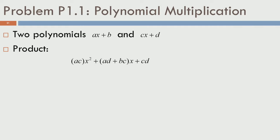Let us take a small problem again. This is a problem on polynomial multiplication. We are given two polynomials ax plus b and cx plus d — that is, you are given the coefficients a, b and c, d — and you are expected to compute the product. The product would be ac·x² plus (ad + bc)·x plus cd, so what we really want are the coefficient of x², the coefficient of x, and cd itself.